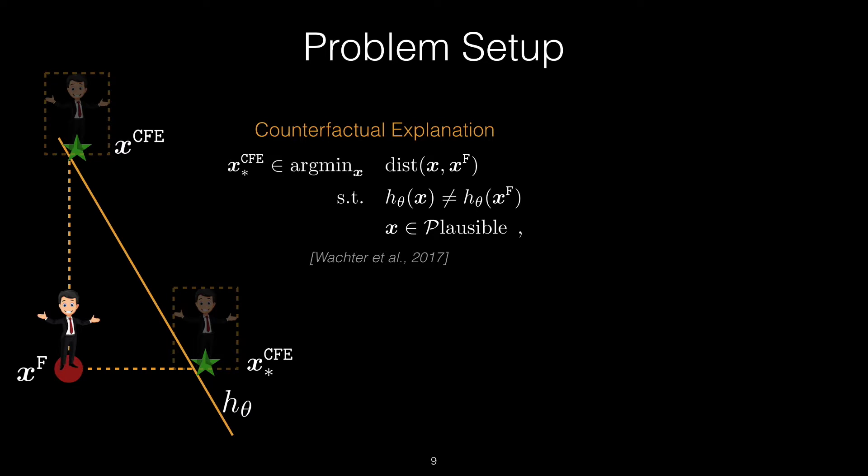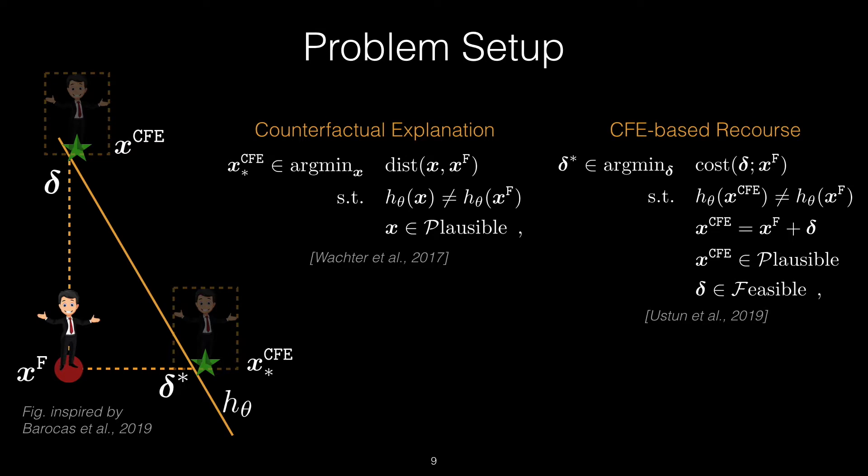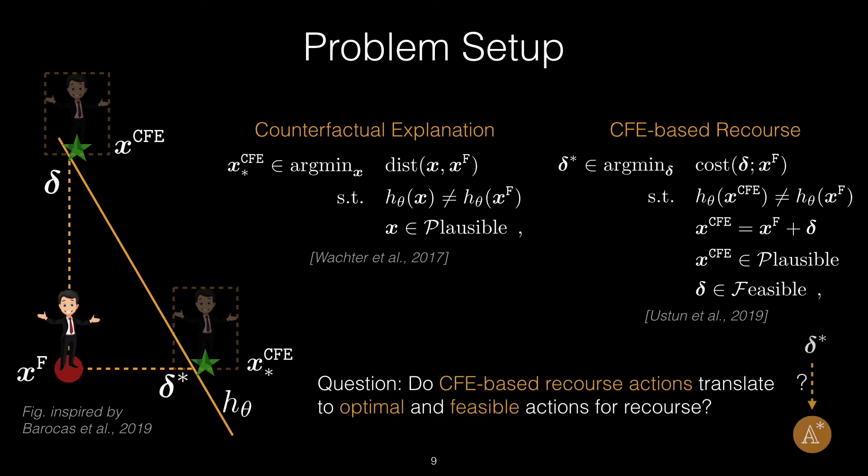To shift the focus from explanations to recourse actions, Ustun et al. reformulated the optimization problem on the left as the one on the right, where now we optimize the cost of actions that would result in a counterfactual instance on the other side of the decision boundary. This is visually shown as the two deltas we see in the image. This reformulation allows adding feasibility constraints over the actions to account for the actionability of the features. For example, age cannot decrease, or an education degree can only be attained, or gender may be considered as immutable. This reformulation assumes that all features can be modified in an additive and independent manner, which may not be very realistic, as we'll see in a few slides.